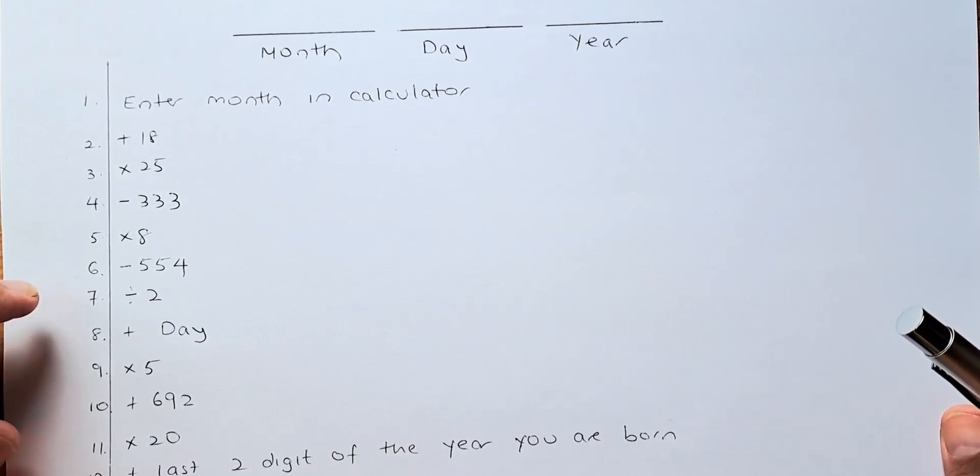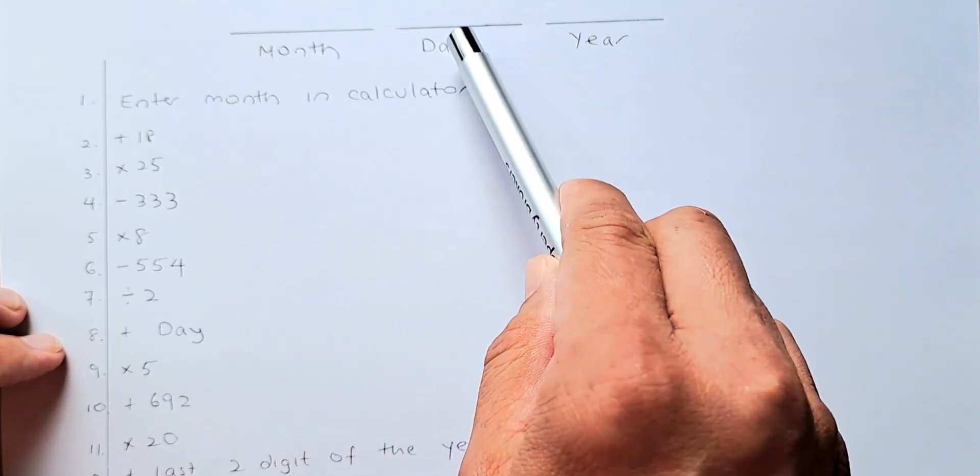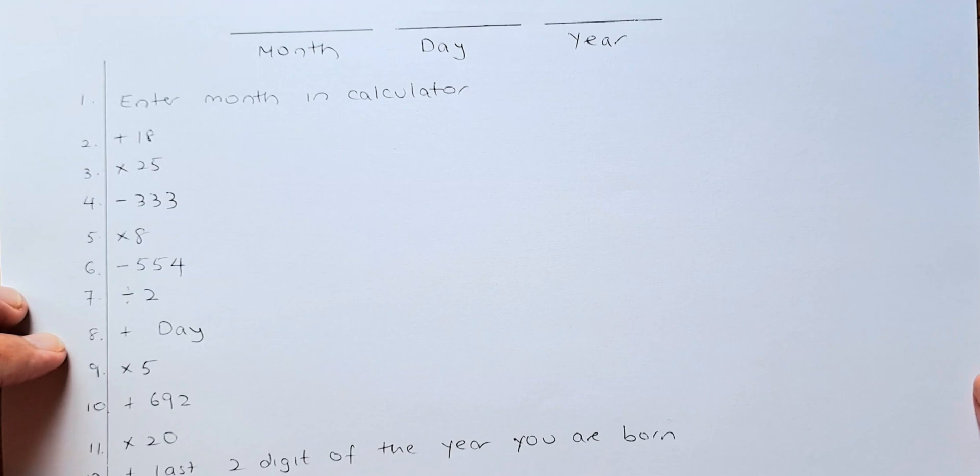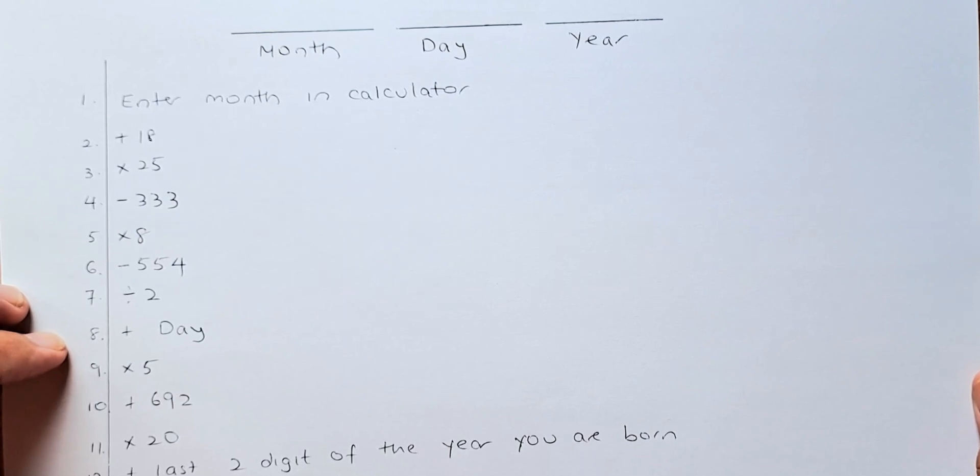Now, once you are at step 7, you are going to step 8. Put the day of your birthday. For example, you are born on the 8th of June, you put 8. If you are born on the 21st of August, you add 21. Then you press the equal sign again and we'll continue.